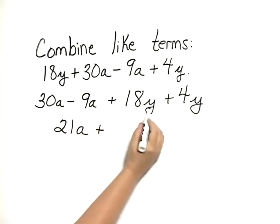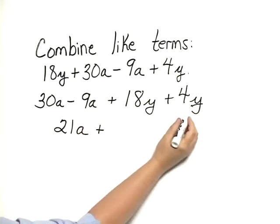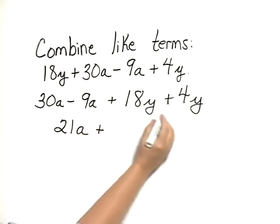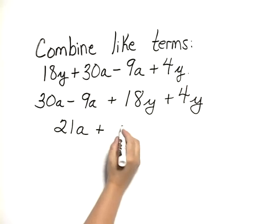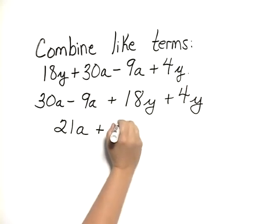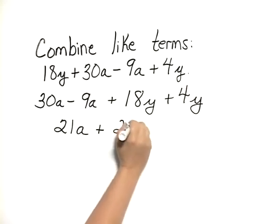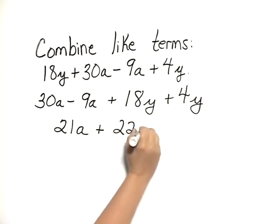And then we have 18y plus 4y. We can add the coefficients. That gives us 22y. And we have combined the like terms.